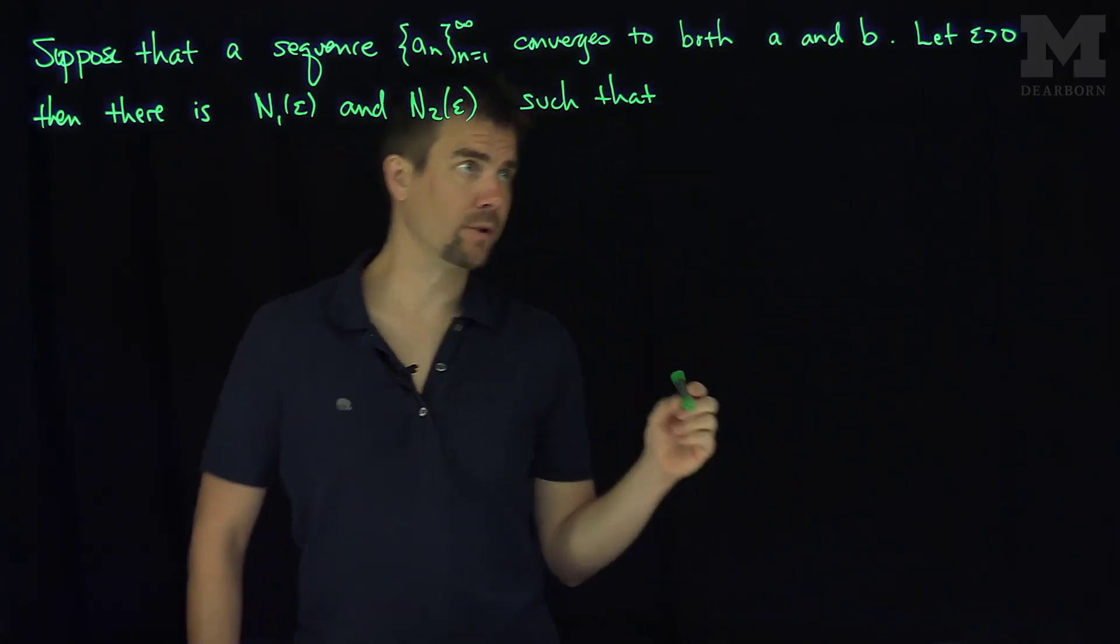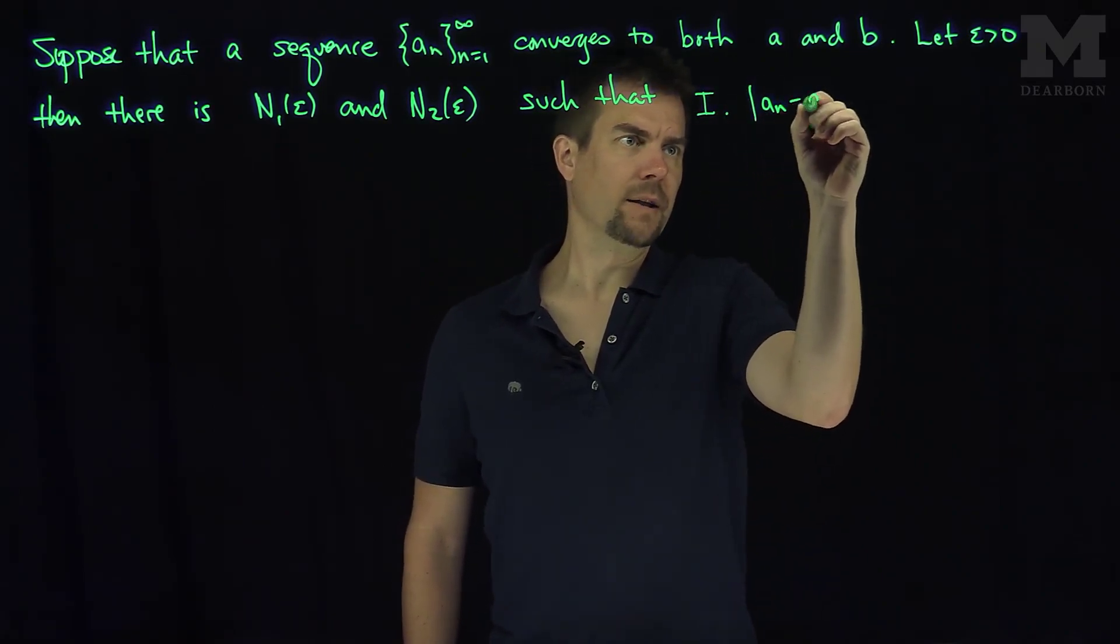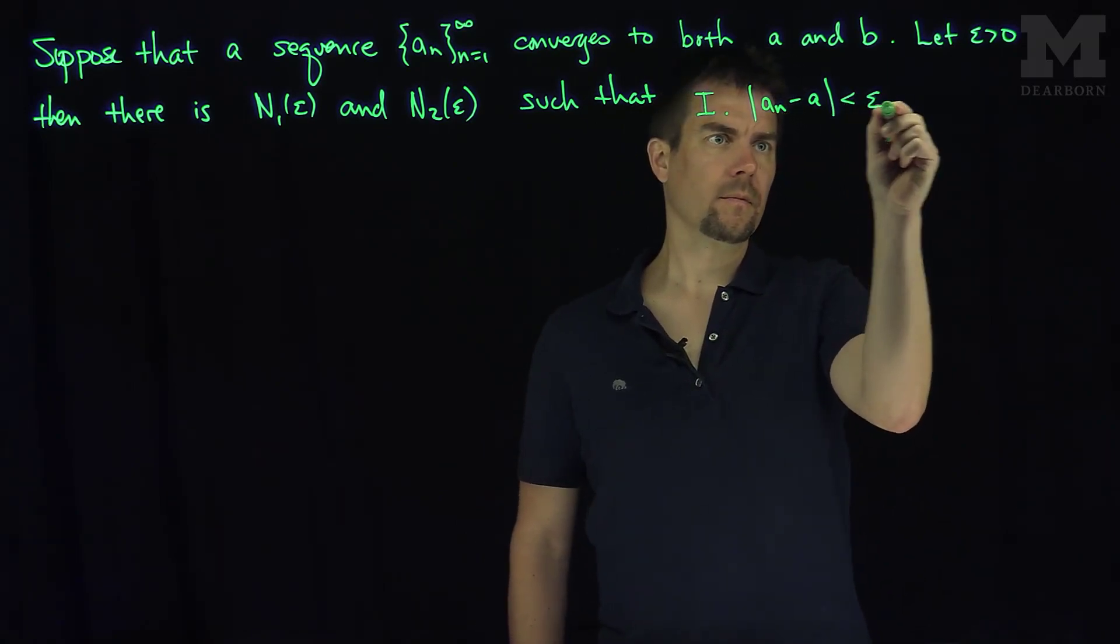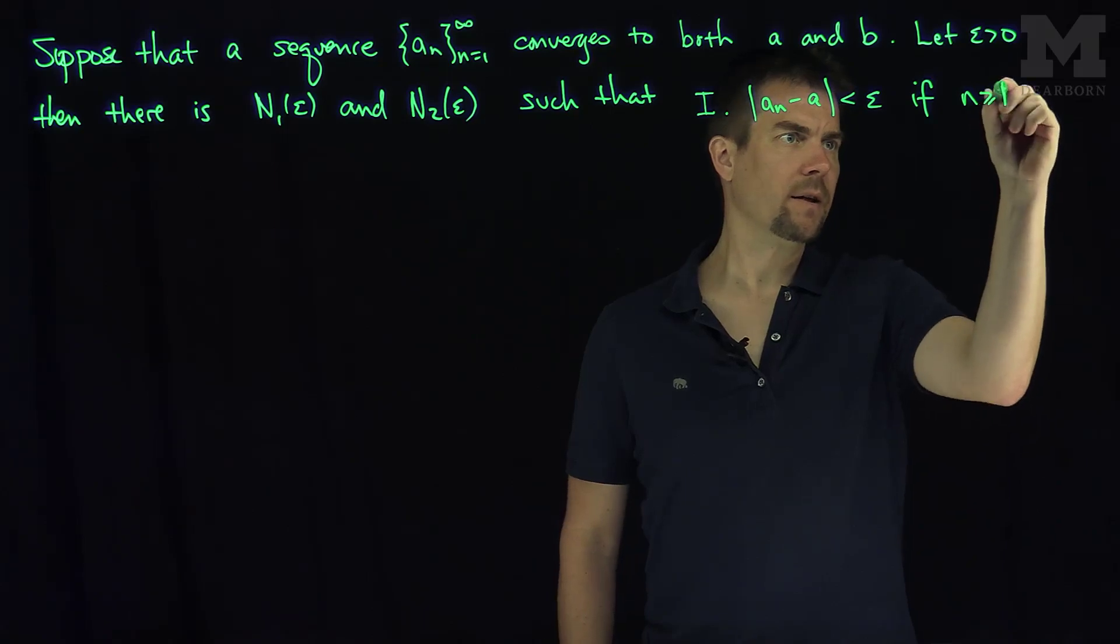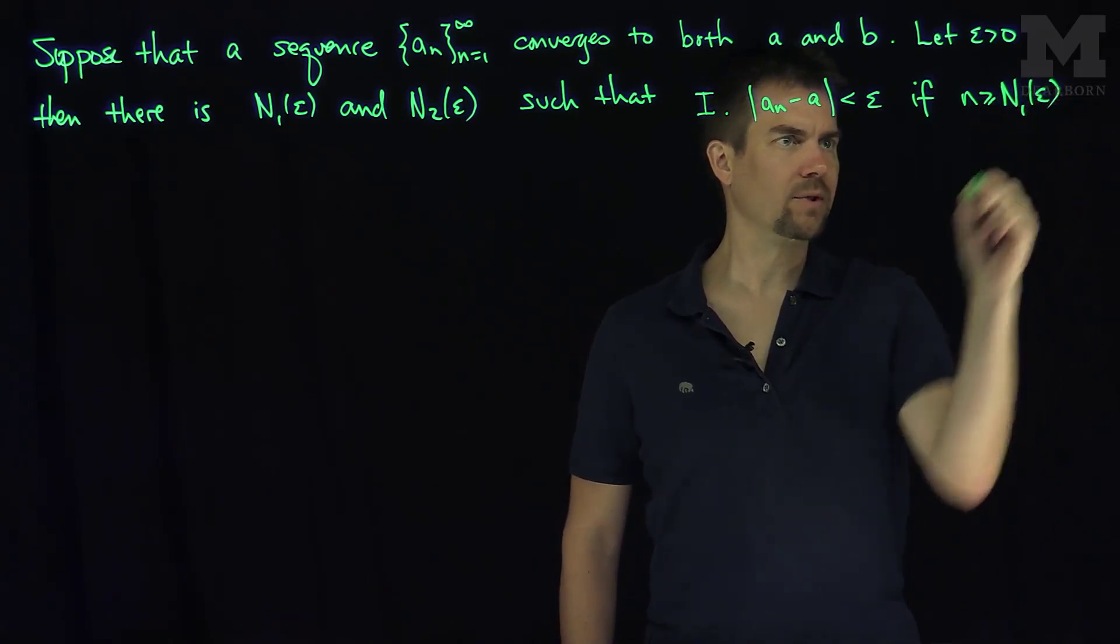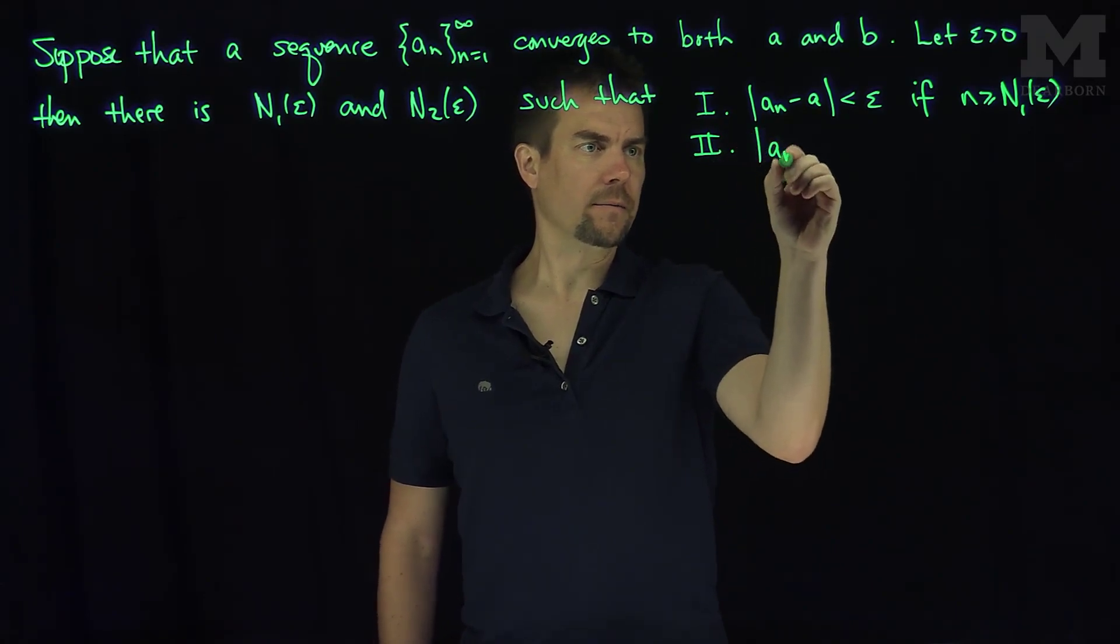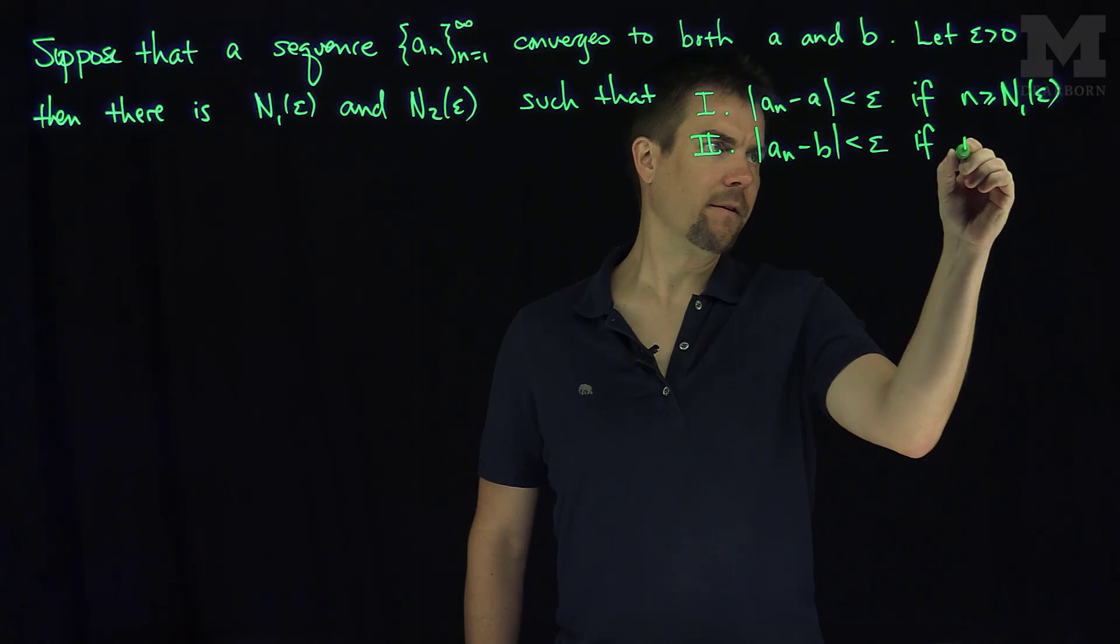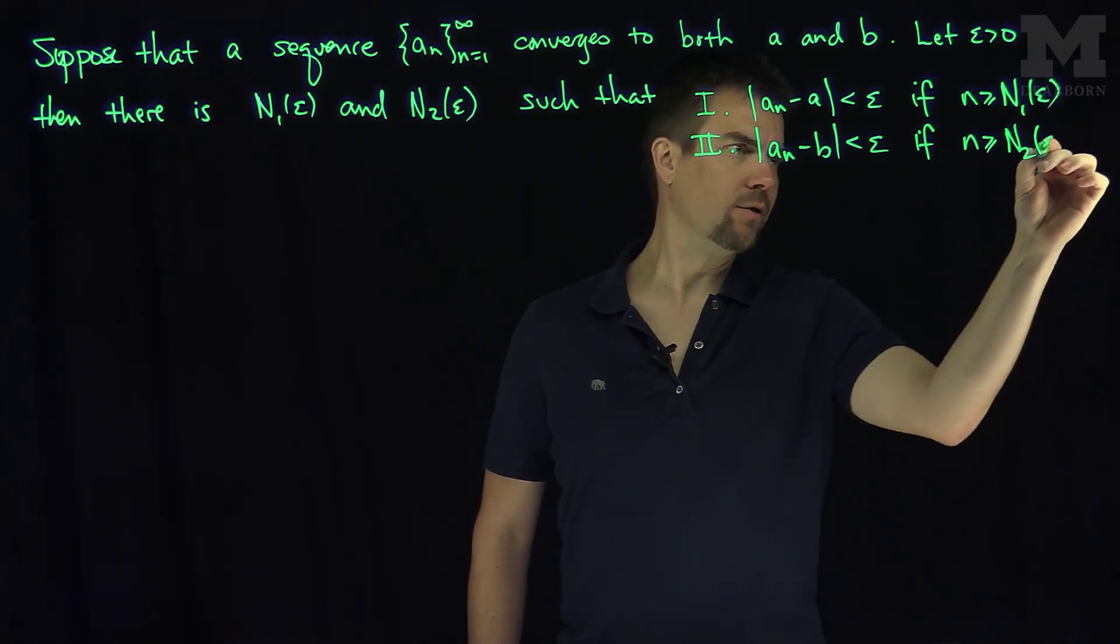The first is that |a_n - a| can be made less than epsilon if n is bigger than N1(ε). The second is that |a_n - b| is less than epsilon if n is bigger than or equal to N2(ε).